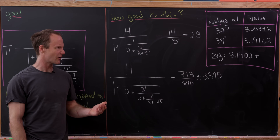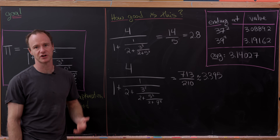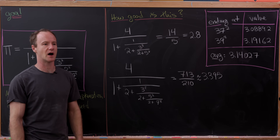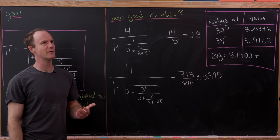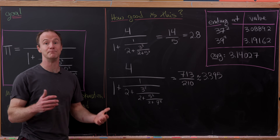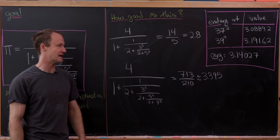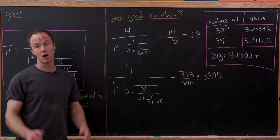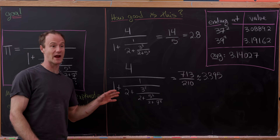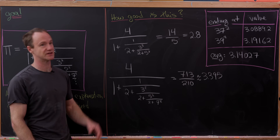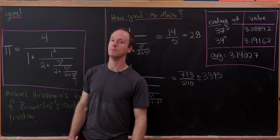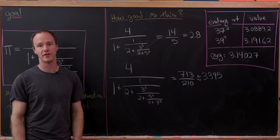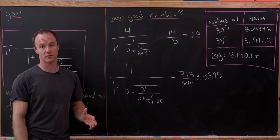Maybe if you're interested, calculate what happens after a hundred terms or a thousand terms and post what you get in the comments. Some of you probably know how to measure the rate of convergence — give us a clue in the comments as to the rate of convergence of this continued fraction versus other representations of pi.